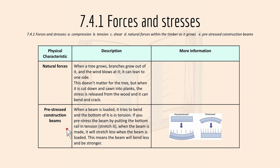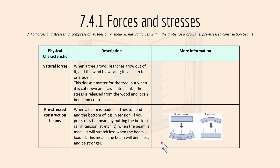For pre-stressed construction beams, when the beam is loaded, it tries to bend and the bottom of it is in tension. If you pre-stress the beam by putting the bottom rail in tension — like you stretch it when the beam is made — it will stretch less when the beam is loaded. This means the beam will bend less and it will be stronger.